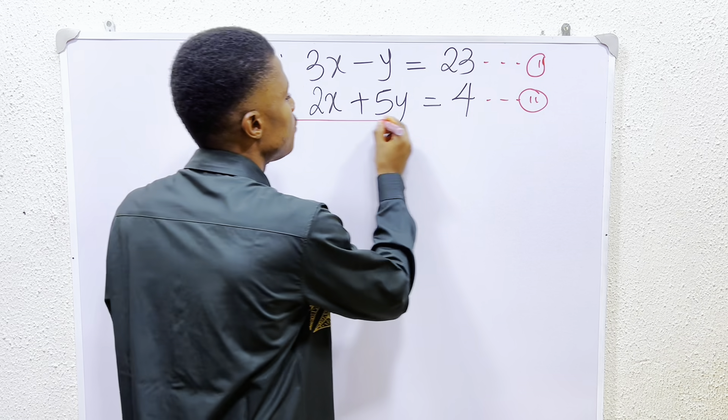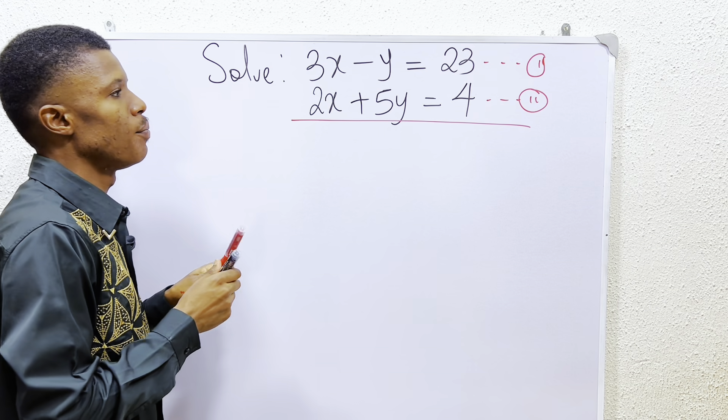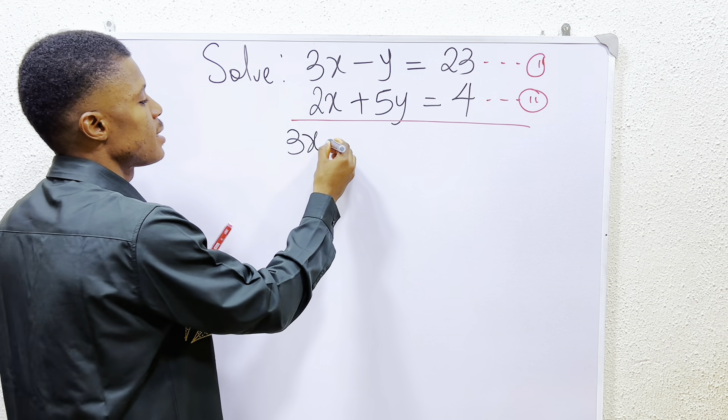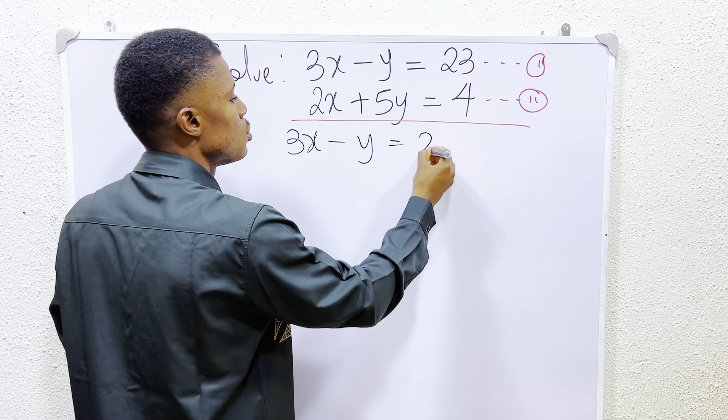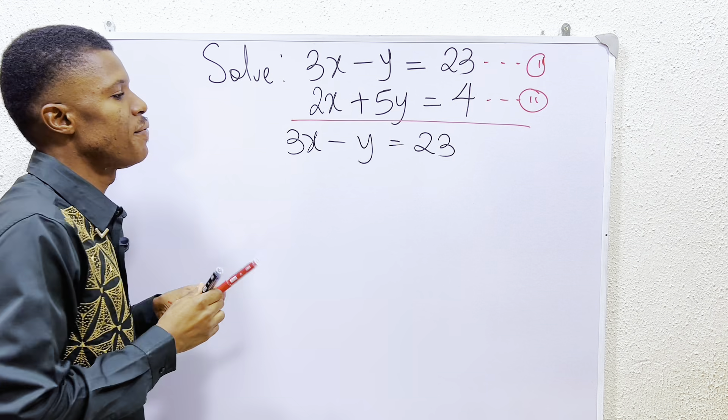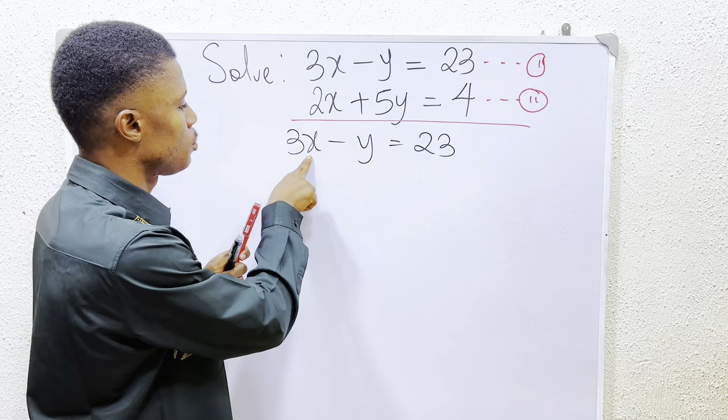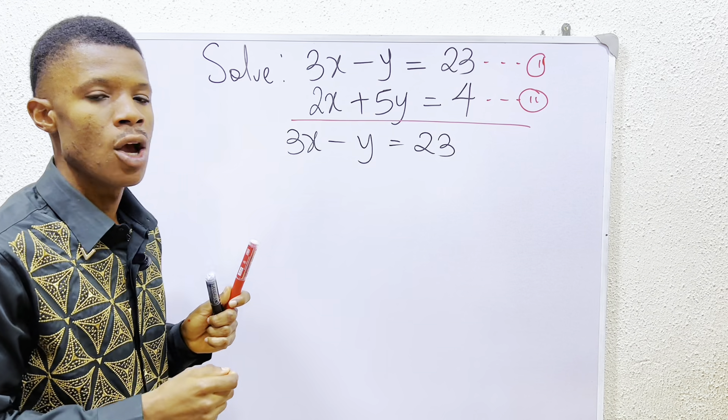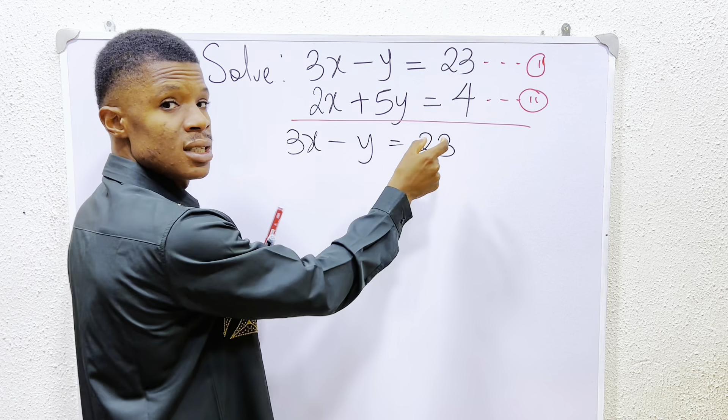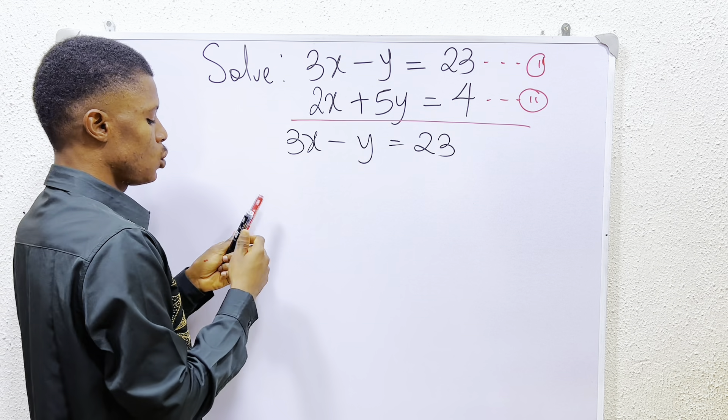So what do I have to do? It is very simple. Equation 1 says that 3x minus y is equals to 23. So the first thing I have to do is to subtract 3x from both sides. Or we say 3x crosses equality sign.